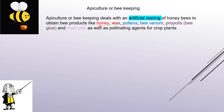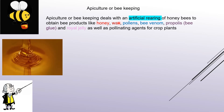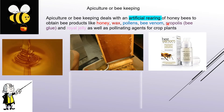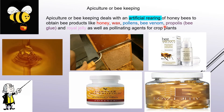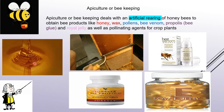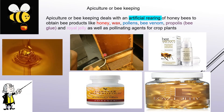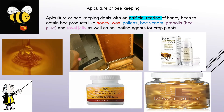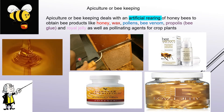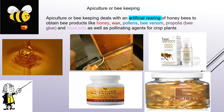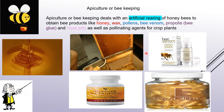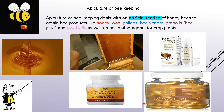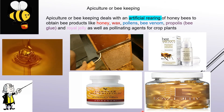Apiculture is done to obtain bee products like honey, wax, pollens, bee venom, propolis (that is bee glue), and royal jelly. Honey has a lot of medicinal importance. Bee wax is important for candle making and cosmetics such as lipstick and nail polish. Pollens, bee venom, propolis, and royal jelly are also very important from cosmetic as well as health perspectives.